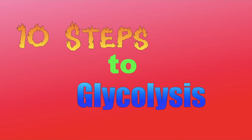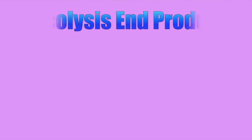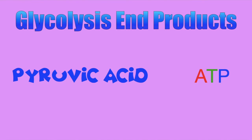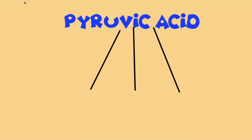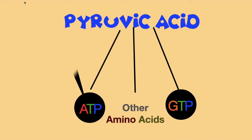There are 10 steps in the process of glycolysis. Before we dive into that, let's look into the structure of the two wanted end products, pyruvic acid and ATP. Pyruvic acid is used to create various other important molecules, including more ATP.